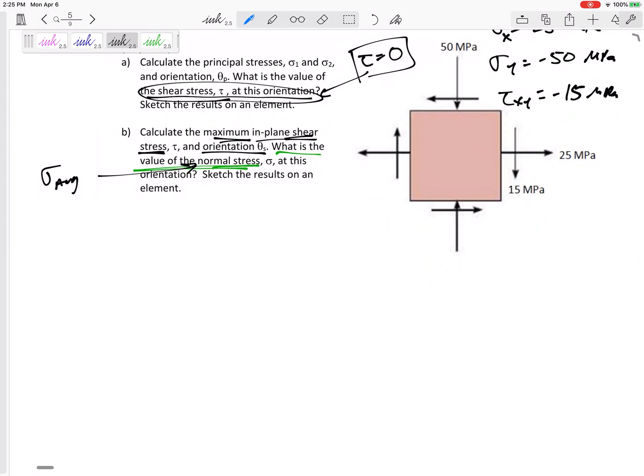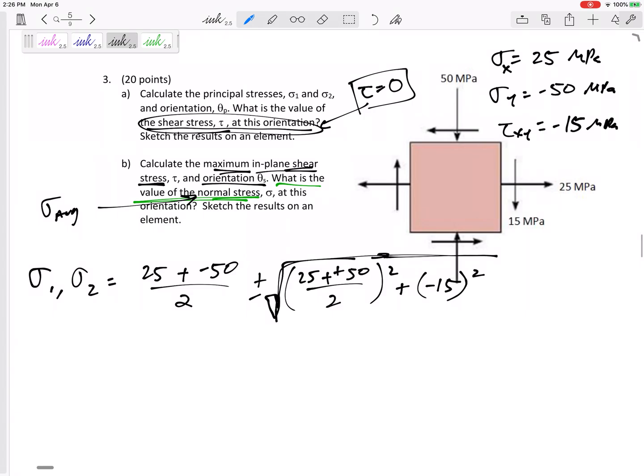Alright, so the principal stresses sigma 1 and sigma 2, there's an equation. The equation says sigma x, 25, plus sigma y, negative 50, divided by 2, plus and minus the square root of sigma x minus sigma y divided by 2 squared plus tau squared. Okay, be careful, you know, with those positives and negatives. Alright, so this would be negative 12.5 plus and minus 40.39. So negative 12.5 plus 40.39 will be 27.89 MPa.